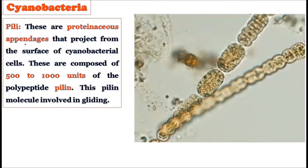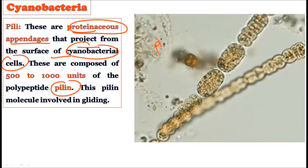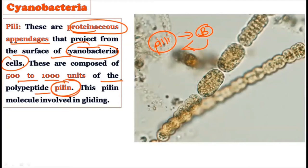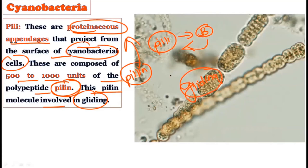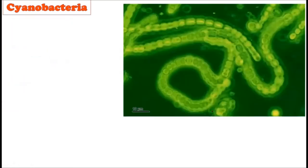Gliding makes cyanobacteria more similar to bacteria than algae. Now, pili are proteinaceous appendages composed of a protein called pilin — 500 to 1000 units of pilin polypeptide — that project from the surface of the cyanobacterial cell. These are typical bacterial structures also possessed by cyanobacteria, and they are responsible for locomotion and gliding.